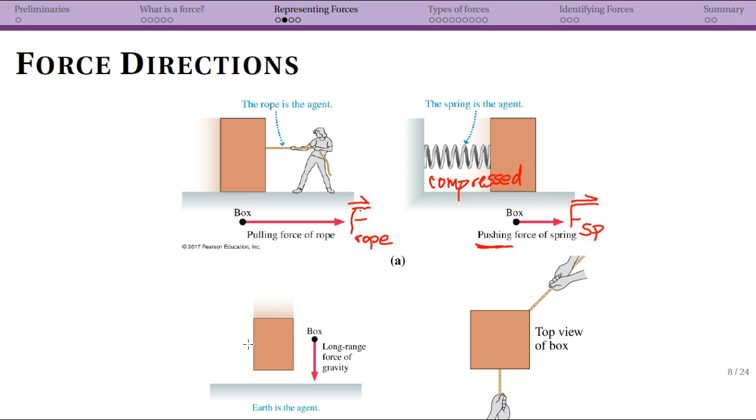Next we have gravity. Earth is the agent - we would call the cause of the force gravity, but earth is actually the agent - and so we have the gravitational force which pulls straight down. Again note that our object is the box. We've labeled that.